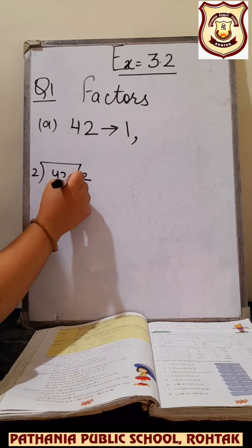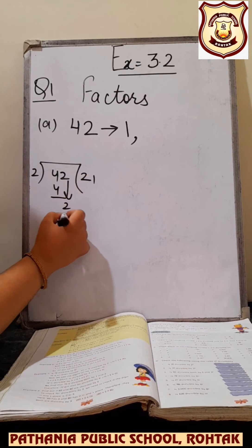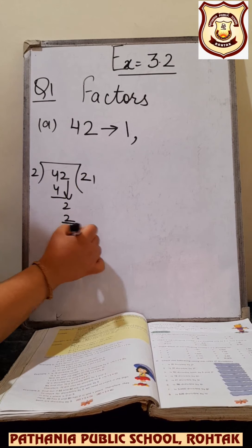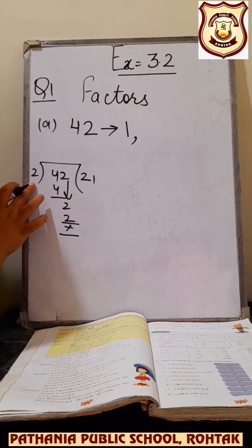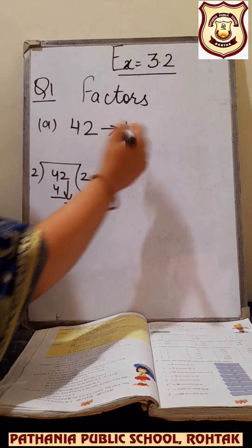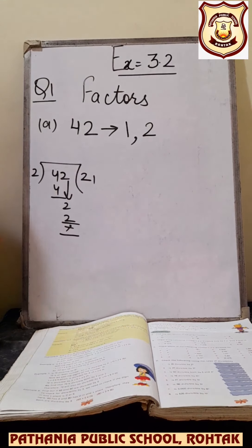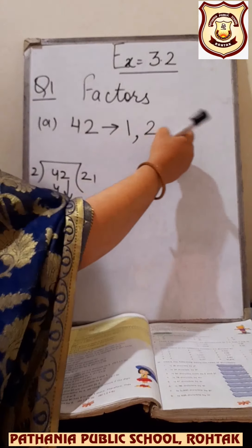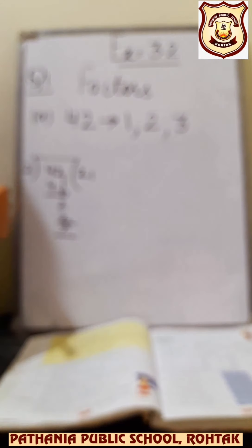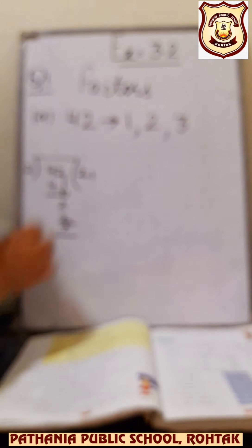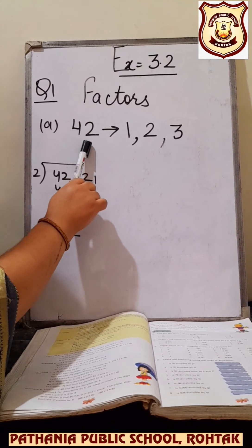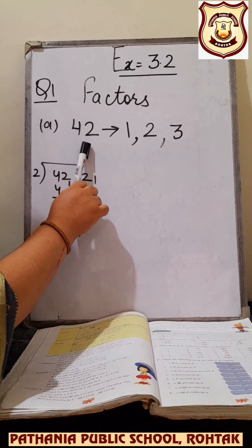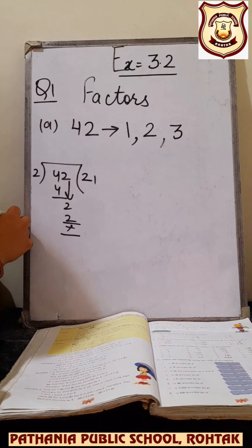2 times 21 is 42. If the remainder is 0 then the number is the factor, otherwise not. Here the remainder is 0, so 2 is a factor of 42. In the same way you will check if 3 is a factor or not. 3 is also a factor of 42 because 3 divides 42 completely leaving no remainder.